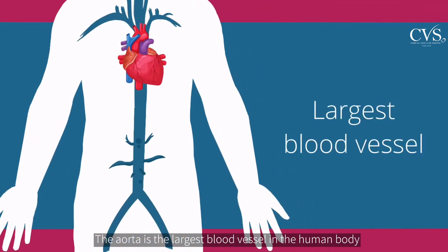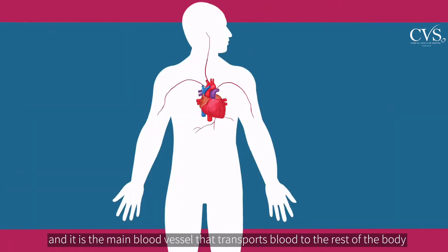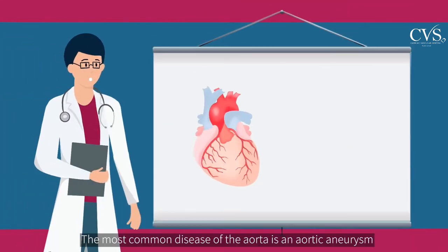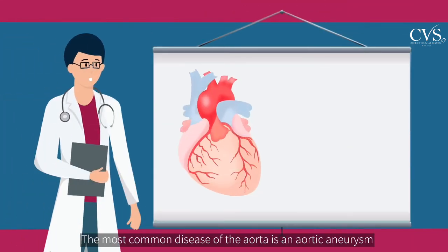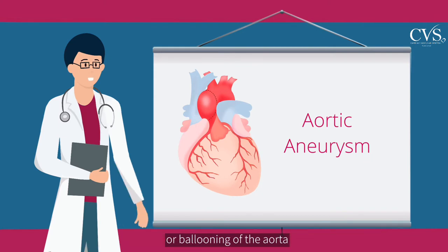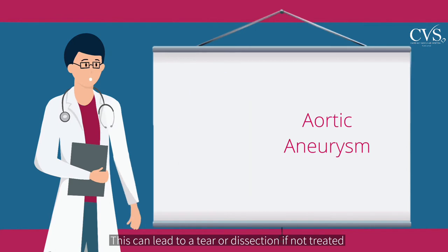The aorta is the largest blood vessel in the human body, and it is the main blood vessel that transports blood to the rest of the body. The most common disease of the aorta is an aortic aneurysm, or ballooning of the aorta. This can lead to a tear or dissection if not treated.